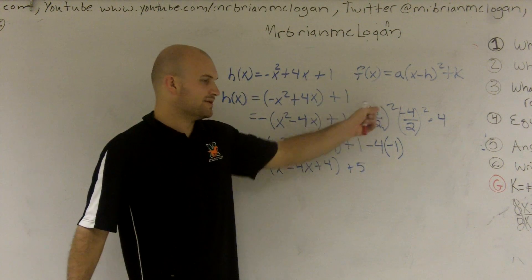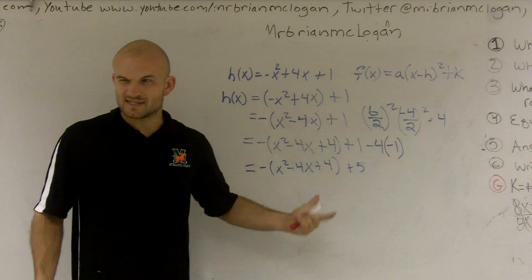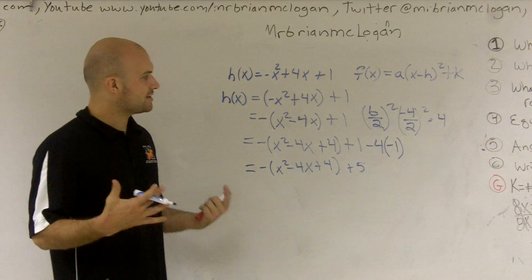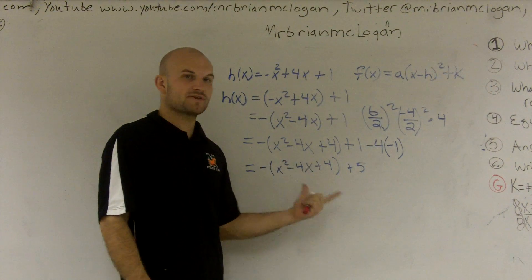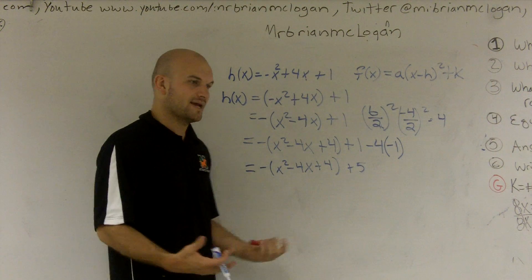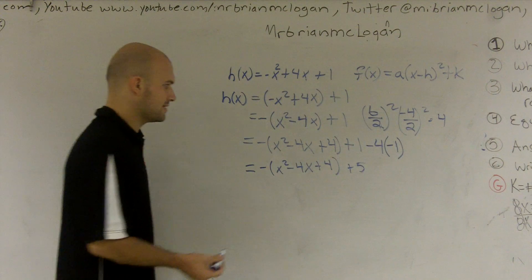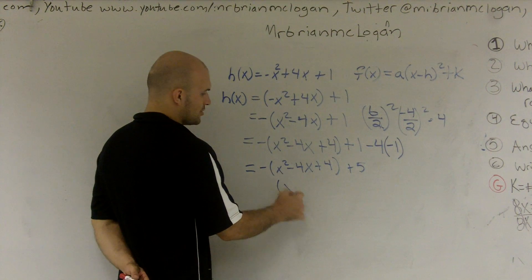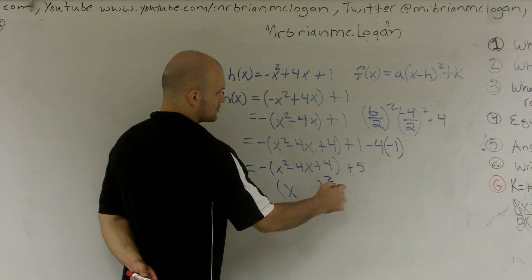Now, why did we add b over 2 inside these parentheses? Why would I even want to do that? The reason why you want to do that is because now when you have a perfect square trinomial, you can make it into a binomial square.